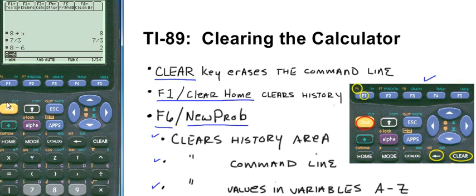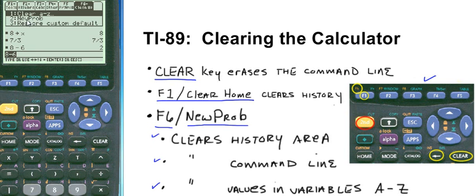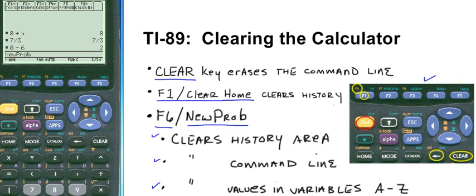So we punch F6, gold F1. We can scroll down to new problem, which is option number 2, or we can just punch 2. That command echoes in the command line. Now hit enter, and we're done.